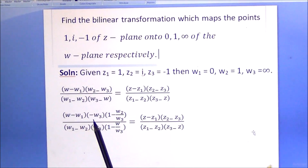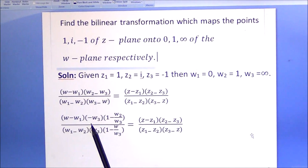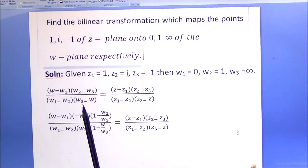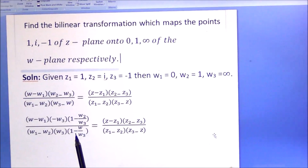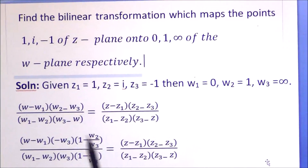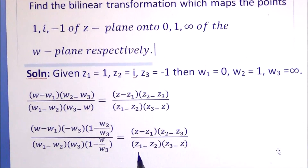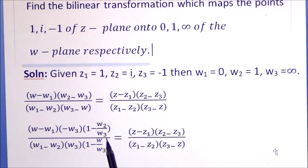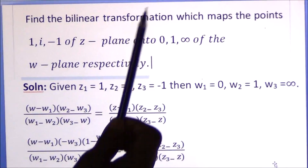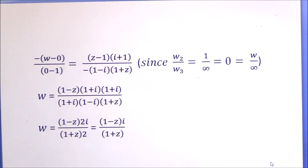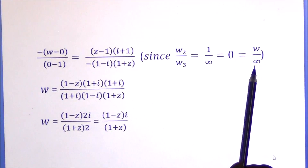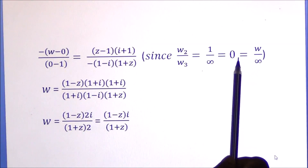Since W3 = infinity, we take W3 outside in the cross-ratio formula. By factoring out W3, the term (W2 - W3) becomes -W3(1 - W2/W3), and similarly the denominator gives -W3(1 - W/W3). Substituting W3 = infinity: W2/W3 = 1/infinity = 0, and W/W3 = W/infinity = 0. So both terms reduce to 1.